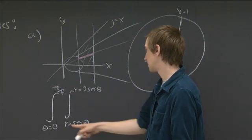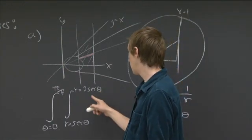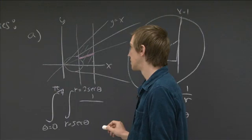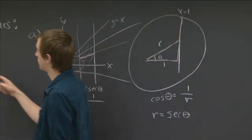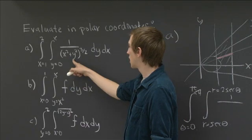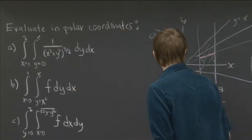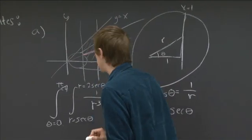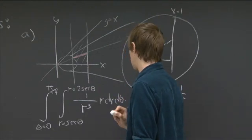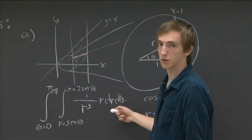So our integral becomes: integral from 0 to pi over 4, r from sec theta to 2 sec theta. Now we re-express our original function in terms of r and theta. We have x squared plus y squared to the 3/2 power. Since x squared plus y squared to the 1/2 is r, then x squared plus y squared to the 3/2 is r cubed, so this is 1 over r cubed. And dy dx becomes r dr d theta. This is the integral we need to compute.